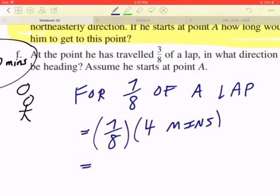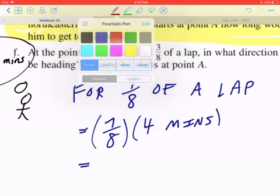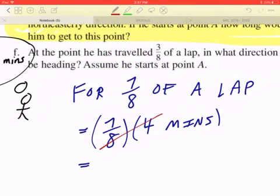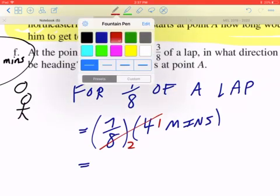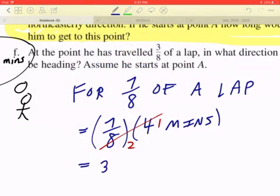And of course, at this point, you can take the calculator or do some mental math. But 4 divided by 8 is going to give you 1 over 2, and 7 divided by 2 is going to be 3.5. So 3 and a half minutes. I hope this makes sense.